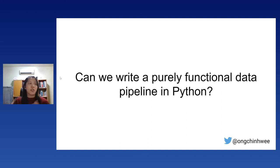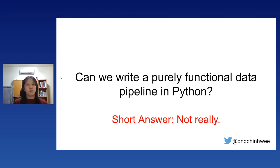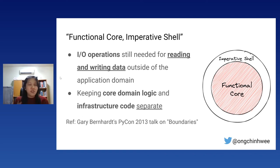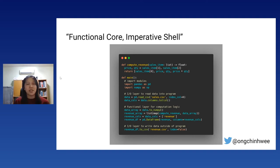Can we write a purely functional data pipeline in Python? Not really, because IO operations are still needed for reading and writing data outside of the application domain. This leads to the 'functional core, imperative shell' design pattern: keeping core domain logic separate from infrastructure code. The functional core holds pure computation logic; the imperative shell handles IO and infrastructure interfacing. In practice, this means having an IO layer to fetch data, a functional layer for computation logic, and an IO layer to write the results.